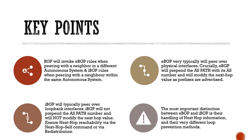There are other differences, such as eBGP having an administrative distance of 20 and iBGP having an administrative distance of 200. But the most important distinction between eBGP and iBGP is their handling of next hop information and how they prevent loops. We've already dealt with loop prevention in the previous video, so in this video let's really drill down on the next hop reachability problem. Let's look at some configurations and examples.